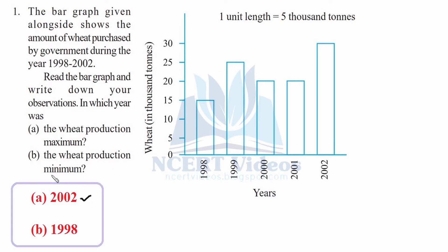For part B, the wheat production minimum — this is the minimum vertical length you can see here — is in 1998 having 15,000 tons. So that was question number one.